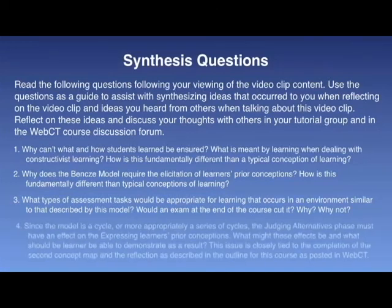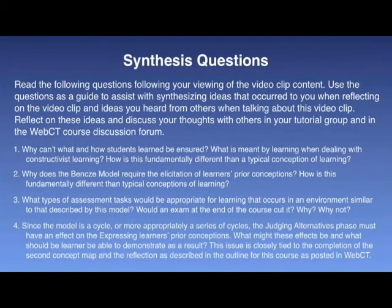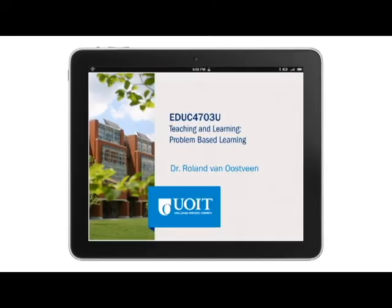Number three: what types of assessment tasks would be appropriate for learning that occurs in an environment similar to that described by this model? Would an exam at the end of the course suffice? Why or why not? Number four: since the model is a cycle — or more appropriately, a series of cycles — the judging alternatives phase must have an effect on the expressing learners' prior conceptions. What might these effects be, and what should the learner be able to demonstrate as a result? This issue is closely tied to the completion of the second concept map and the reflection activity as described in the course outline posted in WebCT.